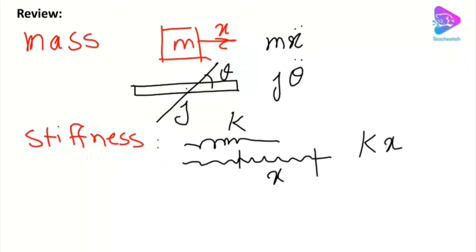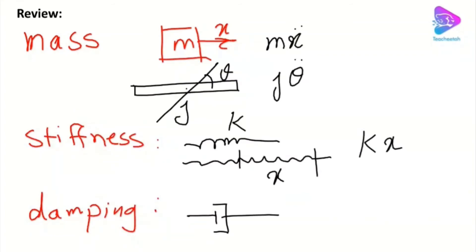Finally, the term we need in vibration problems is damping, which has to do with energy dissipation in the system — like a damper, which could be viscous damping or friction damping. For the undergrad level we pretty much need viscous damping. The resulting force is c·x-dot, where c is the damping constant; in some notations it is called b.